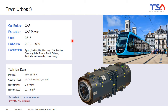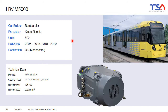This cooling concept is used in the very popular Urbos tram platform by CAF, where the motors have a rated power of only 70 kilowatts per single motor. Such a cooling concept is also used for the light rail vehicle in Manchester, UK.